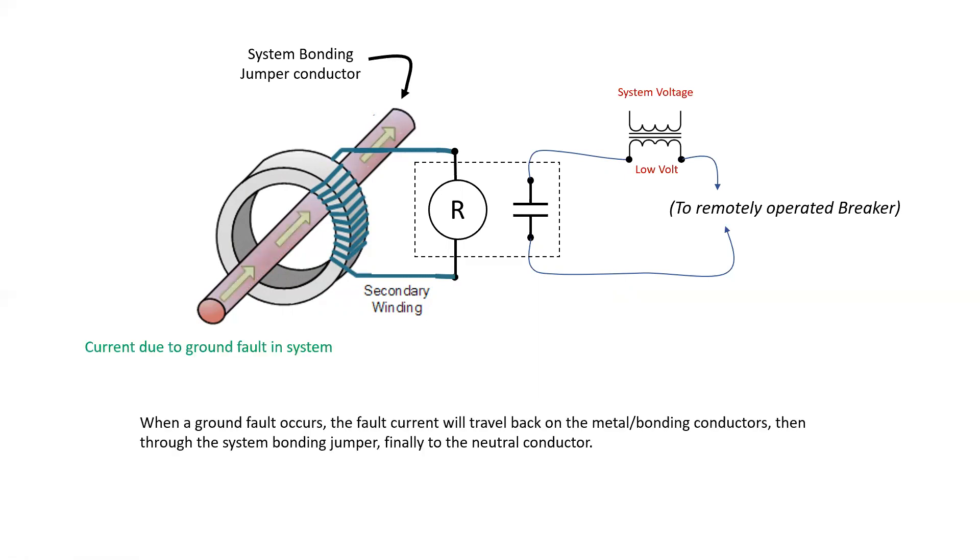During normal operation, there should be little to no current on the system bonding jumper and CT secondary. When we have a significant ground fault or a value that is above what our rating is, the fault current will travel back on the metal bonding conductors through the system bonding jumper finally to the neutral. And what that will cause is a value of current to flow in the secondary of our CT.